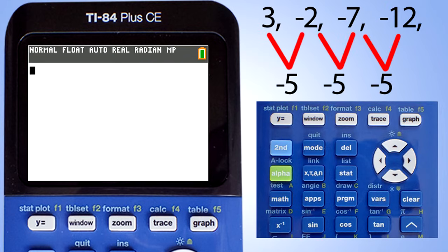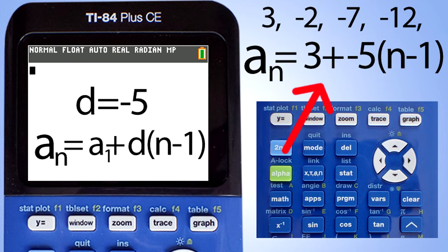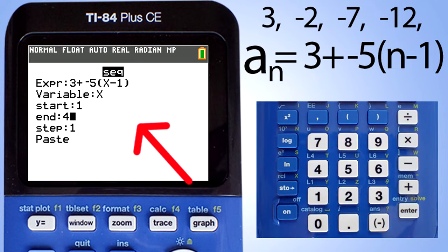Here is the difference between these numbers, negative 5. Thus, d equals negative 5. Remember the arithmetic sequence formula? Plugging in 3 for our a sub 1 and negative 5 for d, the common difference, we get this for our equation. Now go to the sequence page: 2nd button, stat button, ops tab, enter the expression.